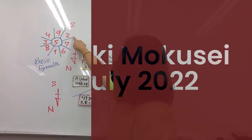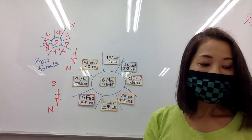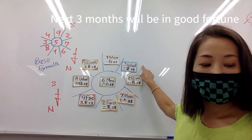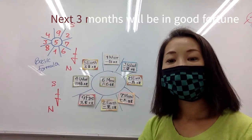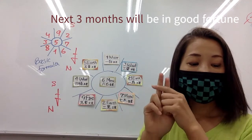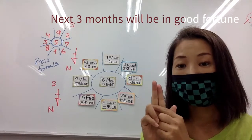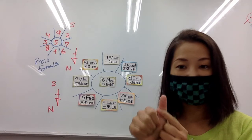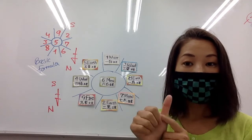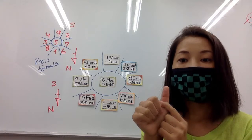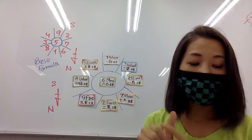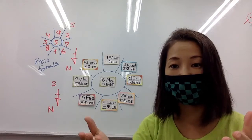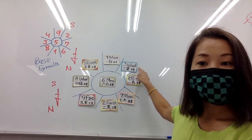Then move, let's move to three words Sanpeki Mokusei. Sanpeki Mokusei is on the Jikoku. So Sanpeki person, three months from July, so July, August, October, you will be in good fortune. So July is the first good fortune month.